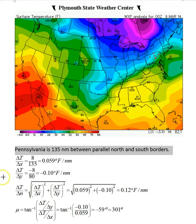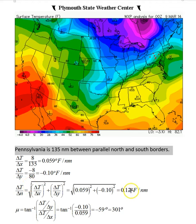When we put these in to get the magnitude as the square root of the squares, we see that we end up with 0.12 degrees Fahrenheit per nautical mile for the magnitude of the gradient.